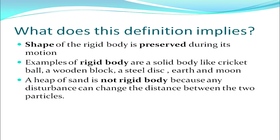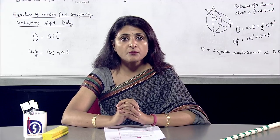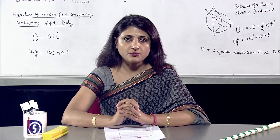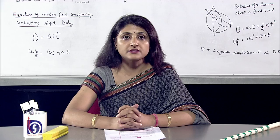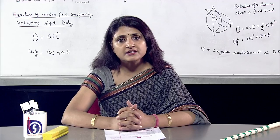The question arises: is a heap of sand a rigid body? A heap of sand is not a rigid body because any disturbance can change the distance between the two particles. How is a rigid body different from a point mass? A point mass is an approximation in which the distance between two bodies is very large compared to their sizes, so their sizes can be ignored. Examples are stars, whose sizes are very small compared to the size of a galaxy, and therefore can be taken as point particles.